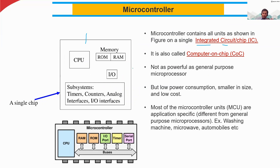The microcontroller has all units inside. You can see the chip with I/O pins — these can be configured as input or output pins. This is the flexibility of the microcontroller. The microprocessor is not like that; it is very strict. In a microprocessor, if a pin is defined as an input pin at design time, you cannot change that. But with a microcontroller, it's more flexible — that is the key difference.